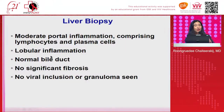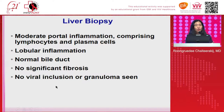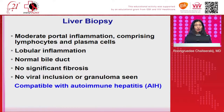In the lobular area, there was hepatic lobular inflammation. The bile duct was normal, with no significant fibrosis. We excluded other causes of hepatitis, such as viral hepatitis B and C, or granuloma like TB, and no viral inclusion or granuloma was seen. The liver biopsy result was compatible with autoimmune hepatitis, or AIH.